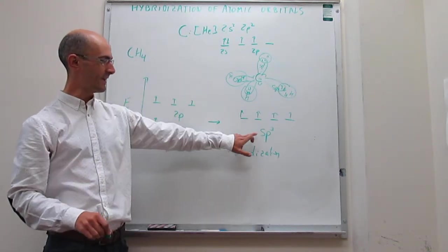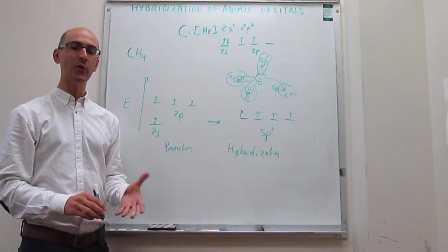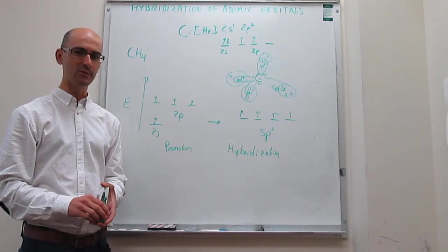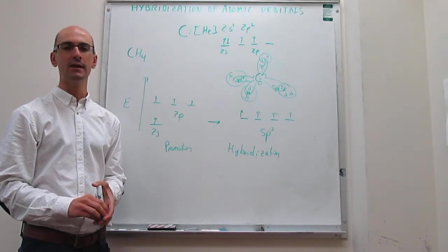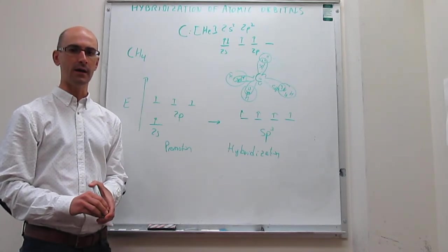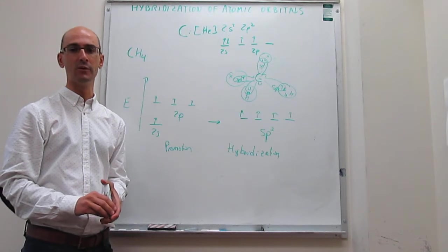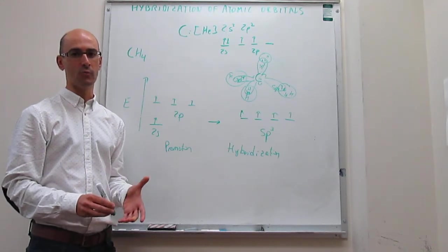This is what we call sp³ hybridization. In the next videos, we are going to see other types of hybridizations that are possible, such as sp² and sp, and then we will be able to explain essentially all of the simple covalent molecules that we have in nature.